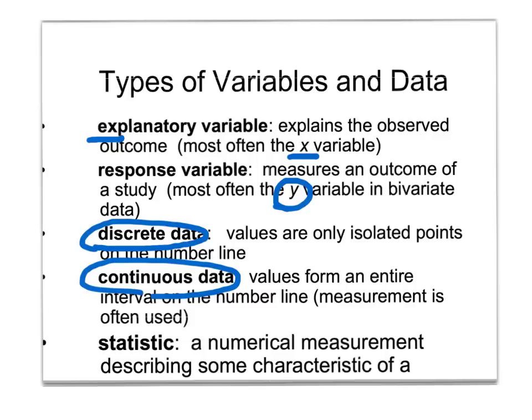The last terminology to add to your notes is a statistic — a numerical measurement describing some characteristic of a data set. These are some more terminology terms to add to your producing data notes.